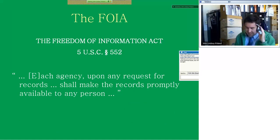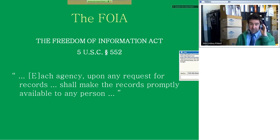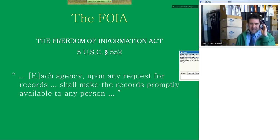The Freedom of Information Act — boiled down, it was passed in 1967. Each agency, upon any request for records, shall make the records promptly available to any person. The promptly part, especially, doesn't always work quite that easily — but boiled down, this is the Freedom of Information Act, a very powerful piece of legislation.